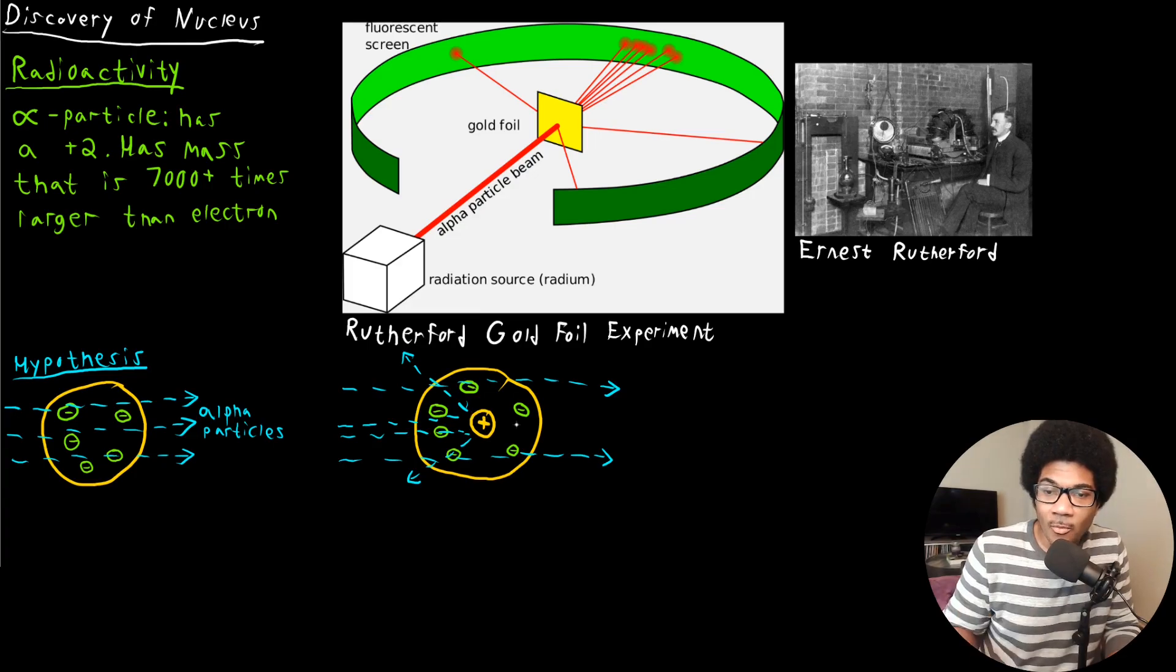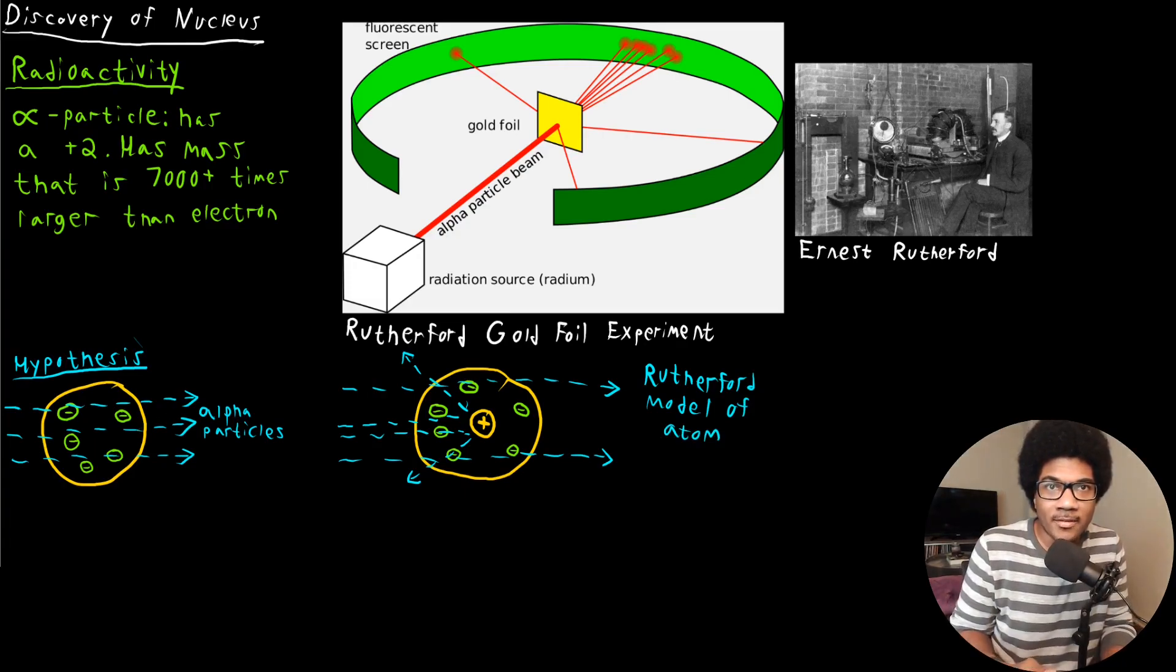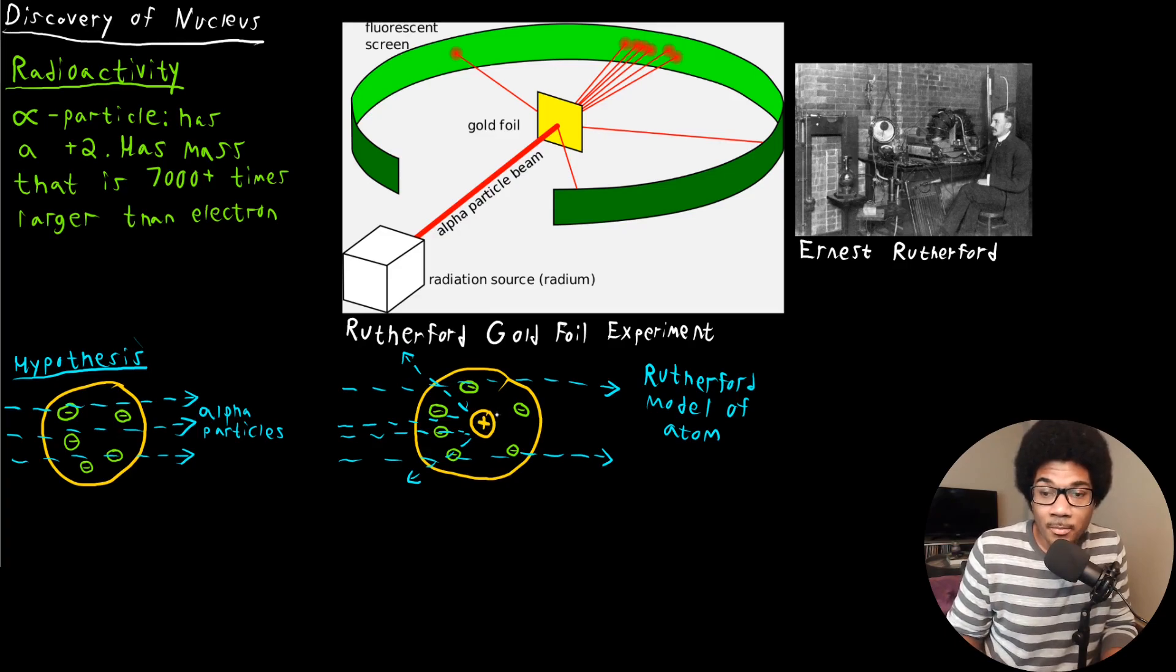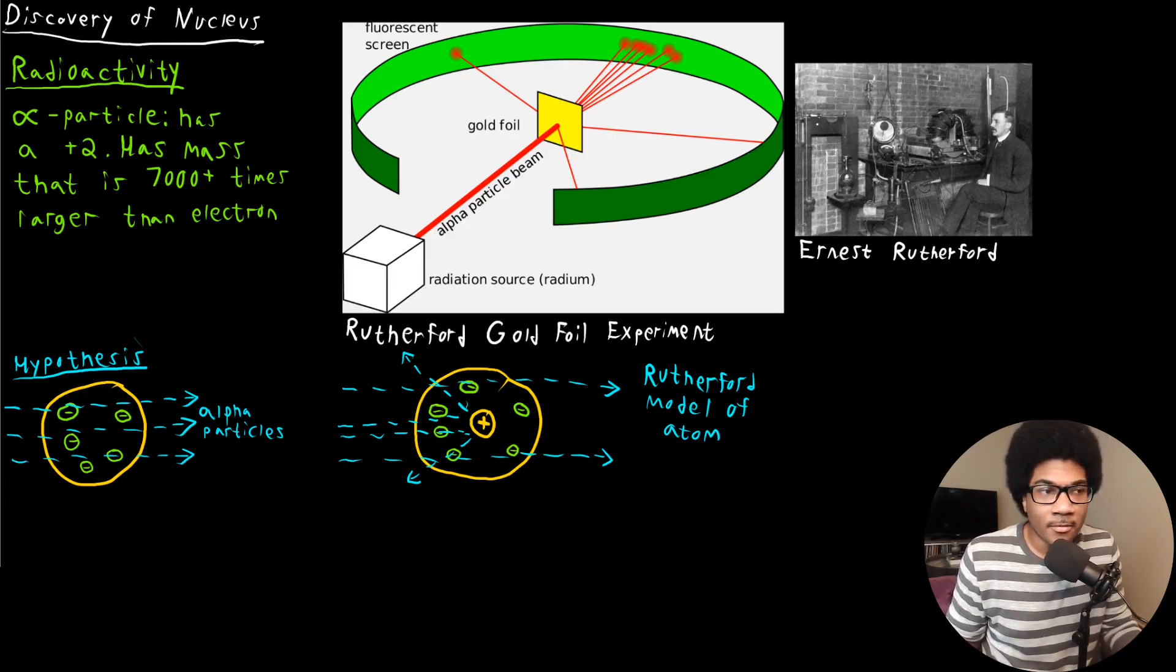Okay, so this Rutherford model, we call this now the Rutherford model. This is the Rutherford model of the atom. And basically it refines the plum pudding model by saying, okay, we know there can't be a sea of positive charge because if there was, then it wouldn't be concentrated enough to deflect the alpha particles in that way. So what we must have is somewhere in that atom must be a densely populated pocket of positive charge. That's the only way that we would be able to see this level of deflection as what we saw in the Rutherford gold foil experiment.